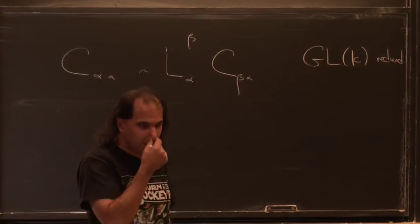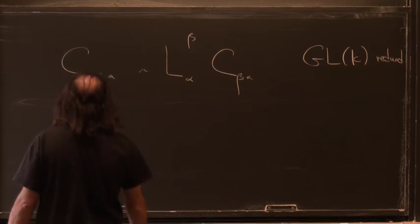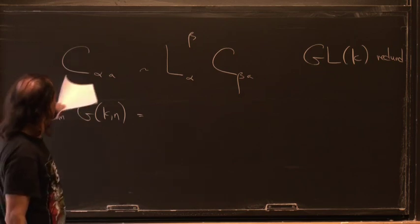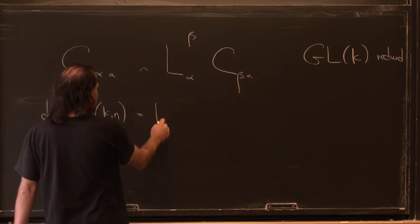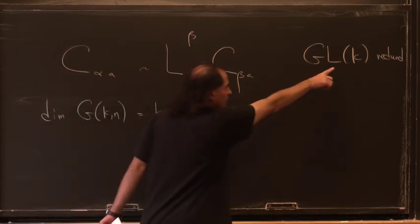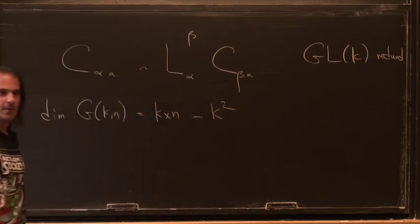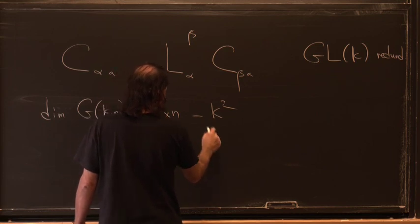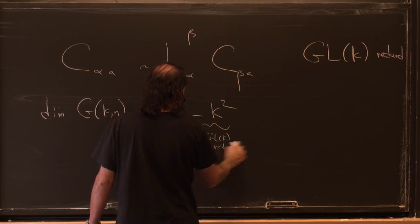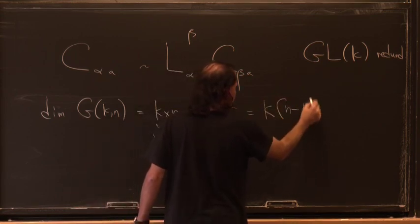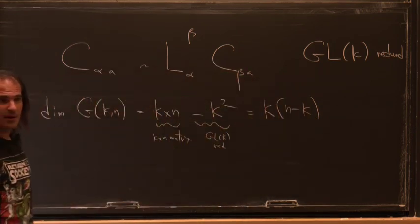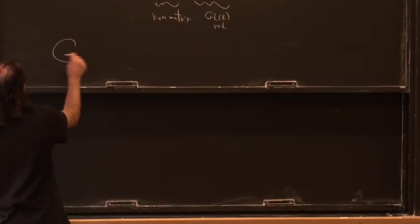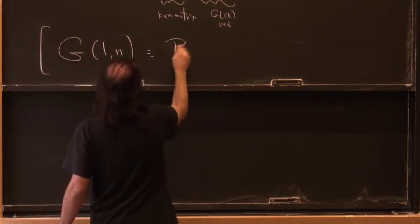We can figure out the dimensionality of the Grassmannian. How many degrees of freedom are there in a k-by-n matrix? There's k times n, but there's the GL(k) redundancy, which is k-by-k. So the dimensionality is k times n minus k squared, which simplifies to k(n-k). When k equals 1, we're back to a projective space: G(1,n) is just P(n-1).